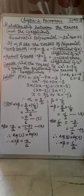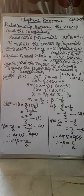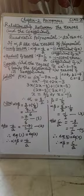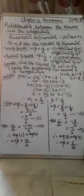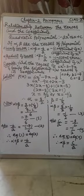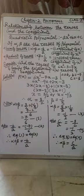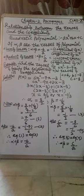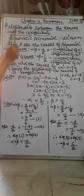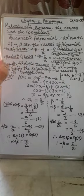Hello students, you all know we are doing chapter 2 polynomials of class 10. So far we have discussed the degree of the polynomial, division of polynomial on the basis of degree, zeros of polynomial and geometrical representation of the zeros of the polynomial. Today we will learn a very important topic: the relationship between the zeros and the coefficient.